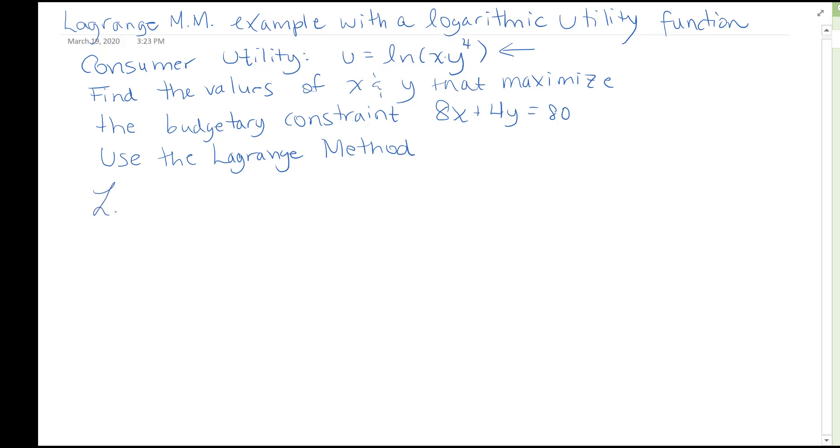Okay, so first of all let's set up that Lagrange function which is the natural log of xy to the 4 plus our dummy variable lambda times 80 minus 8x minus 4y. If you'd like, you're welcome to also do the following: move everything to the other side and make this 8x plus 4y minus 80.